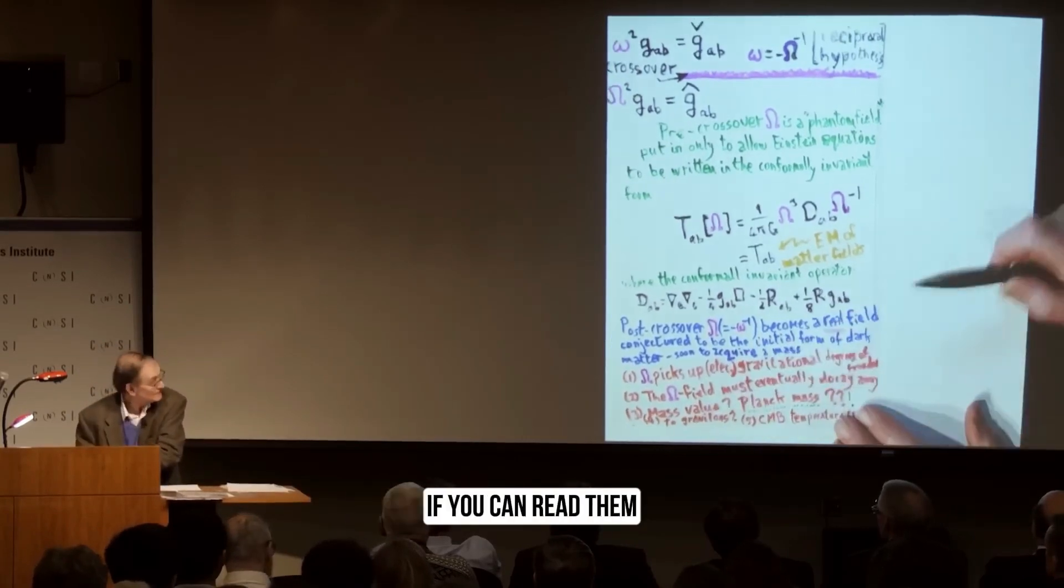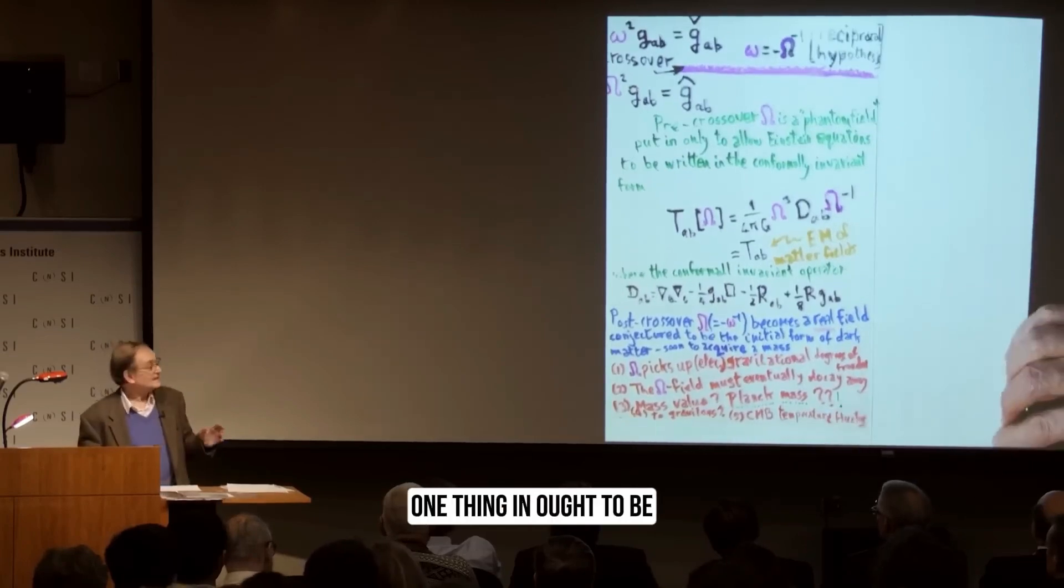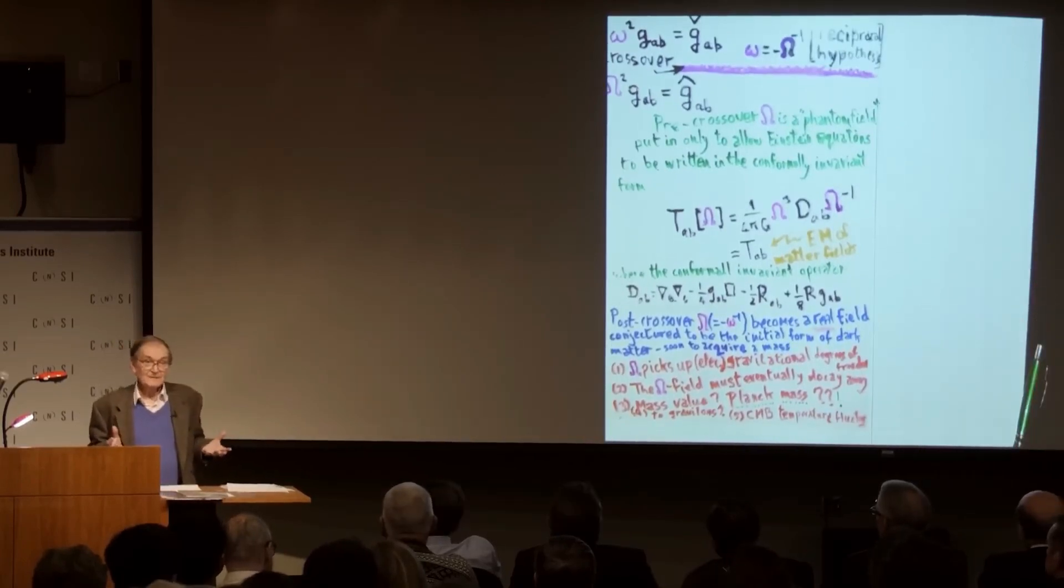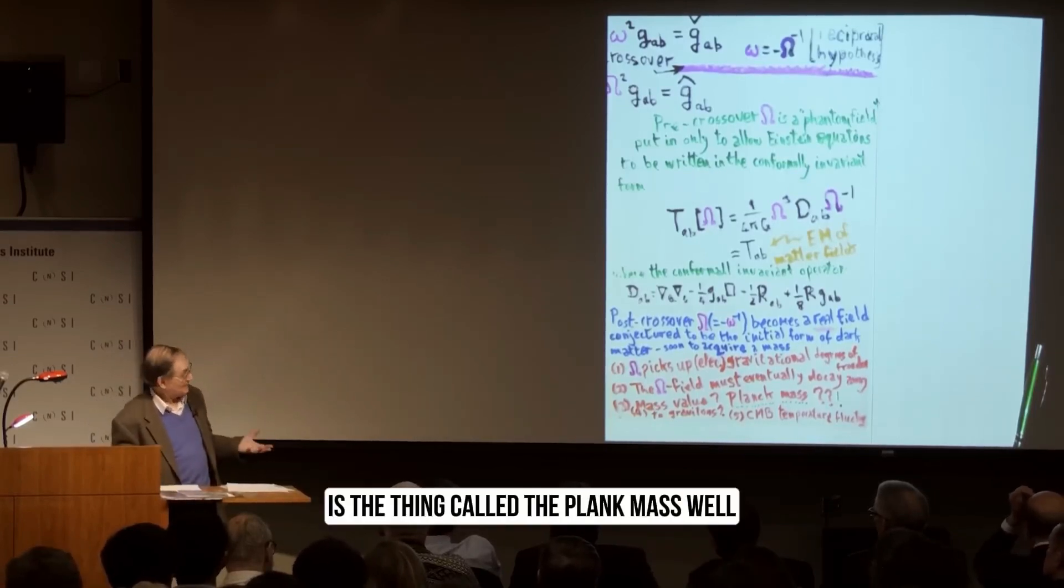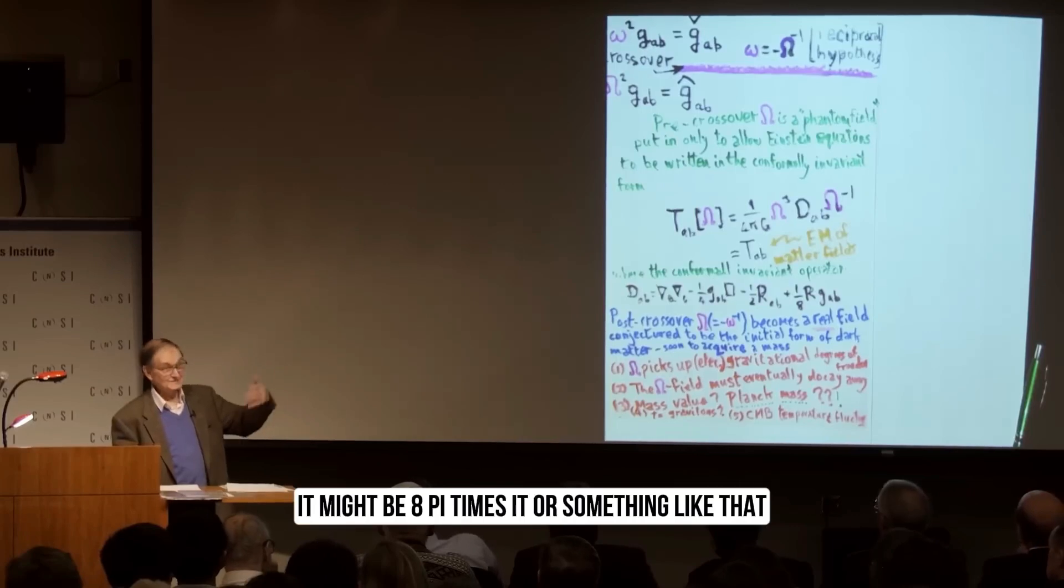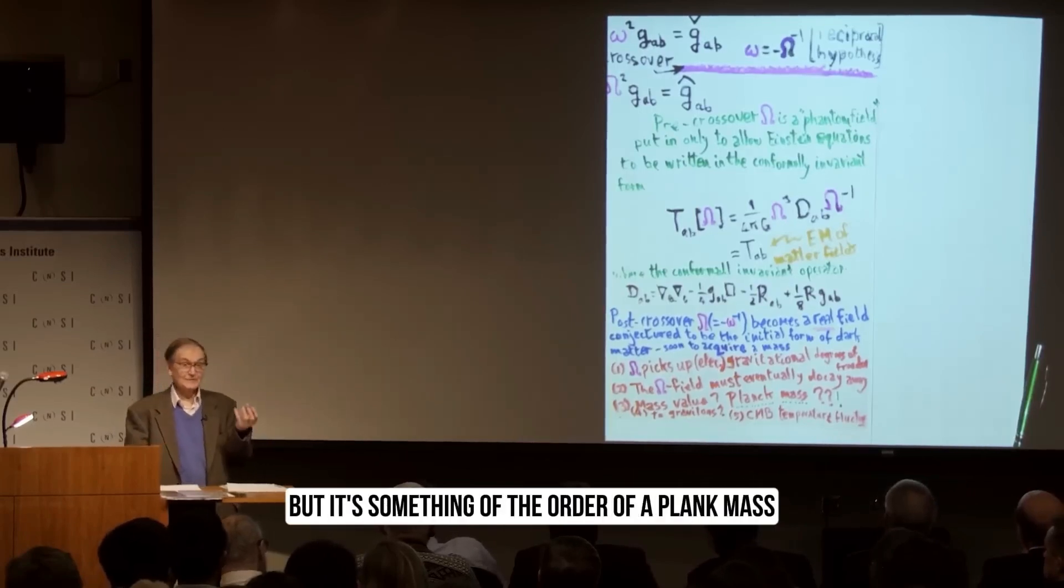One thing it ought to be, what's its mass? Well, the only thing it can be, if you've just got gravity, roughly speaking, is a thing called the Planck mass. It might be 8 pi times it or something like that, but it's something of the order of the Planck mass.